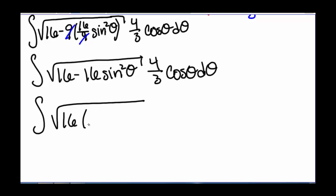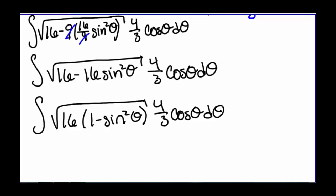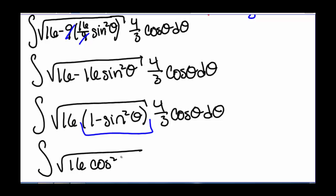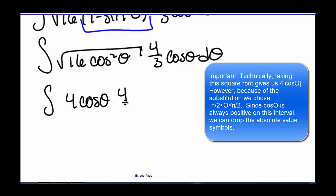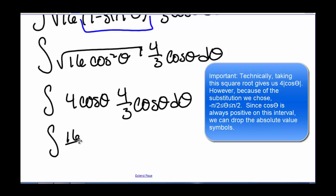So now we have the integral of the square root of 16 times the quantity 1 minus sine squared theta, times 4 thirds cosine of theta d theta. Taking the square root of 16 and cosine squared theta, we get the integral of 4 cosine of theta times 4 thirds cosine of theta d theta. Combining these, we have the integral of 16 thirds cosine squared of theta d theta.